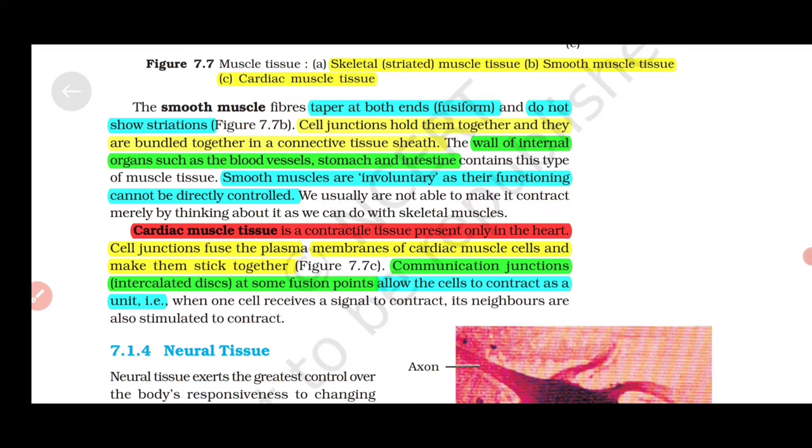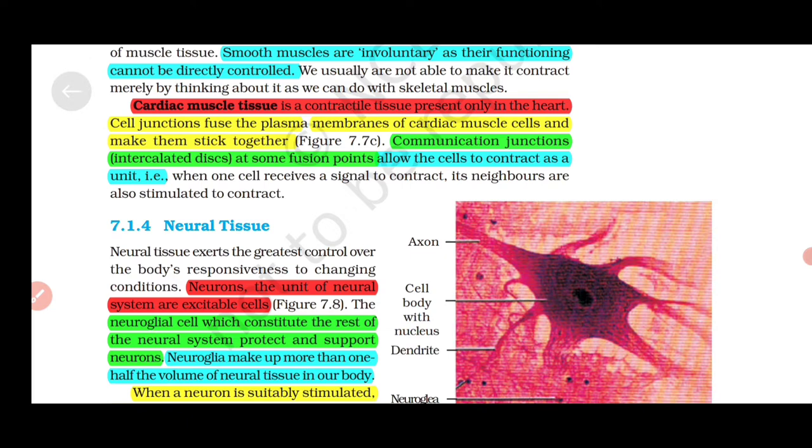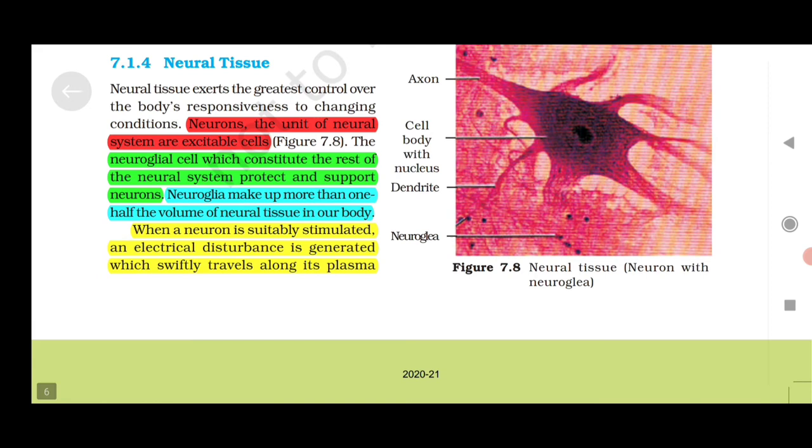Cardiac muscle tissue is contractile tissue present only in the heart. Cell junctions fuse the plasma membranes of cardiac muscle cells and make them stick together. Communication junctions called intercalated discs at some fusion points allow the cells to contract as a unit.